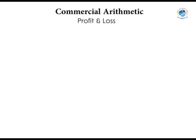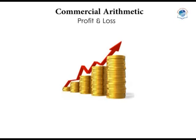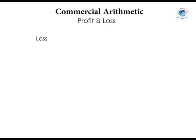Next, we look at profit and loss. The price of a commodity is called its cost or buying price. Profit and loss apply where an individual buys or produces items for sale. Ordinarily, the resale price must be higher than the buying price — the difference is called profit. Profit = selling price − buying price. In unfortunate instances, the selling price may be lower than the buying price, and the difference is called a loss. Loss = buying price − selling price.